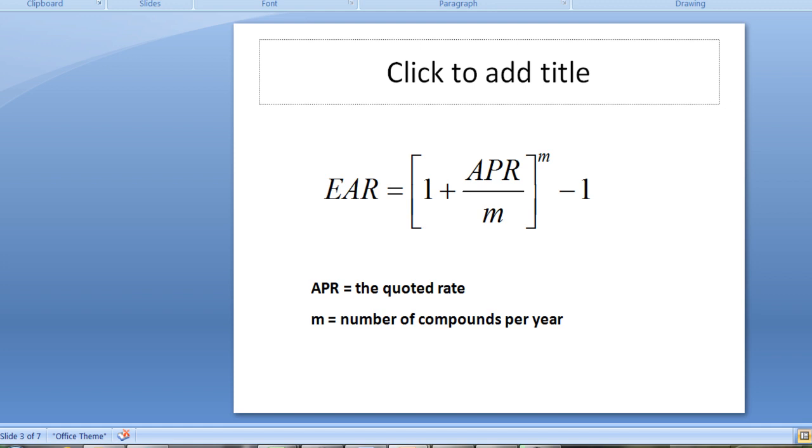So we want to see how we do this calculation. And the calculation or the relationship between these two interest rates is that the EAR, the effective rate, is 1 plus the APR divided by the number of periods and then raised to the number of periods of compounding minus 1. So M is the number of compounds per year.